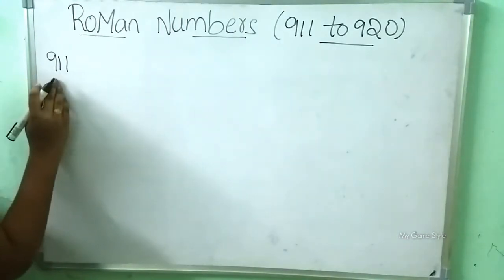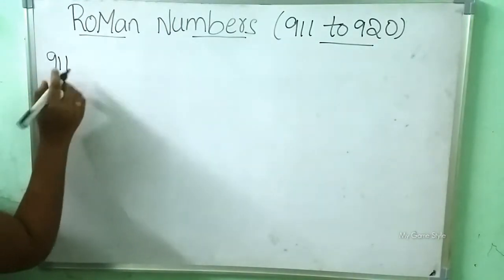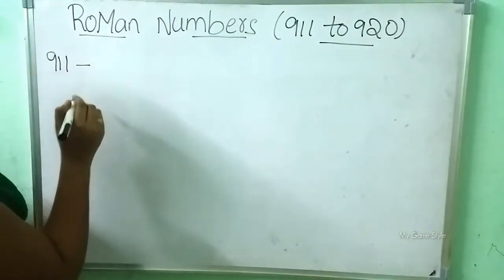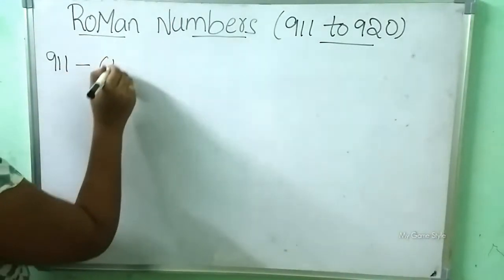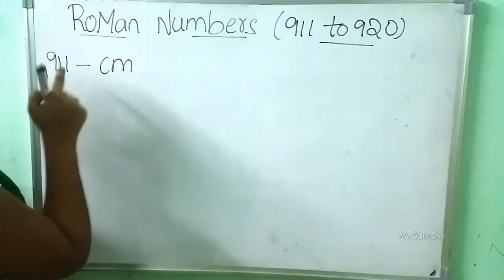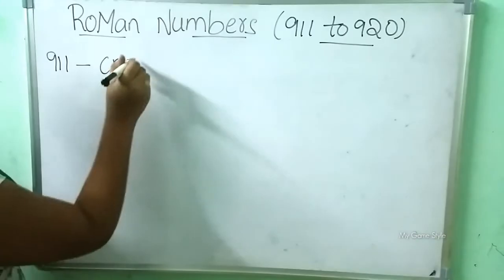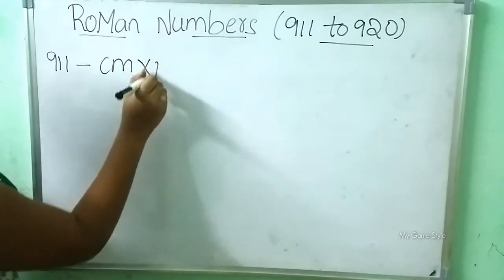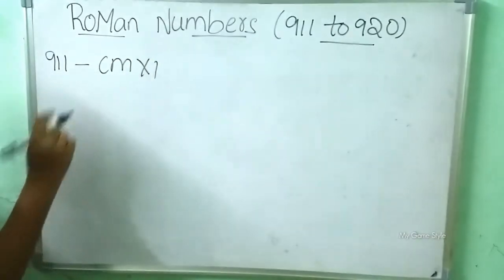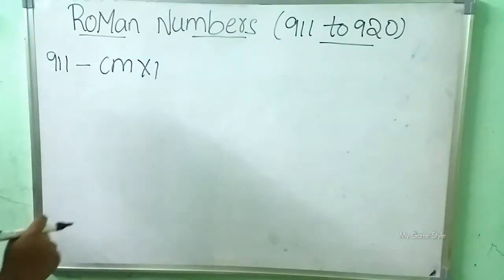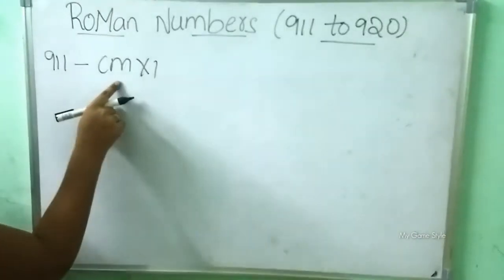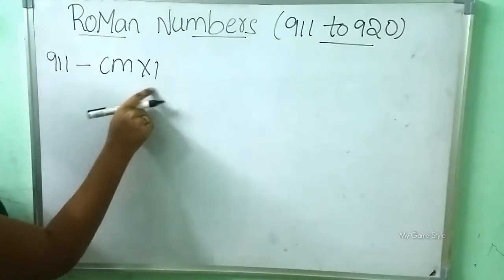911 is 900 and 11. Now how to write? CM is 900. XI is 11. So this means 900 and 11, which gives us 911 written as CMXI.